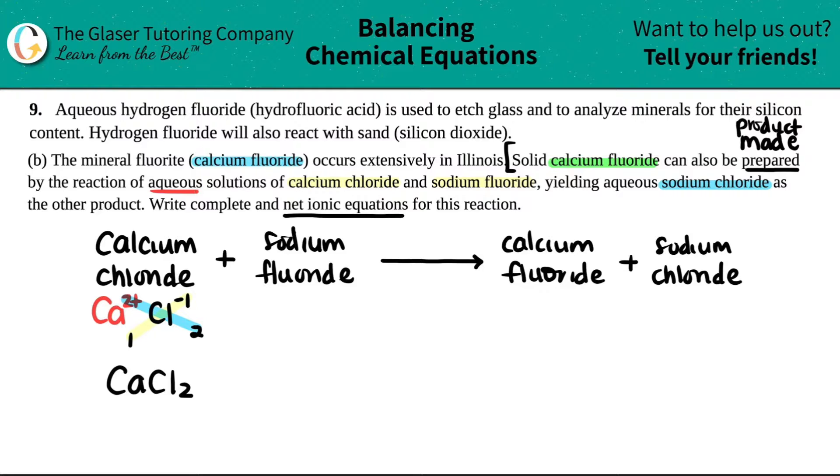So we have kind of the basis. Now we just need the actual chemical formulas. This is going back to knowing how to make a formula. Let's just do this quickly. Calcium chloride: calcium on the periodic table is Ca, and calcium is in group two, so it's a two plus charge. Chloride is chlorine, so that's Cl, and it's in group 17 or 7A. It's a minus one.